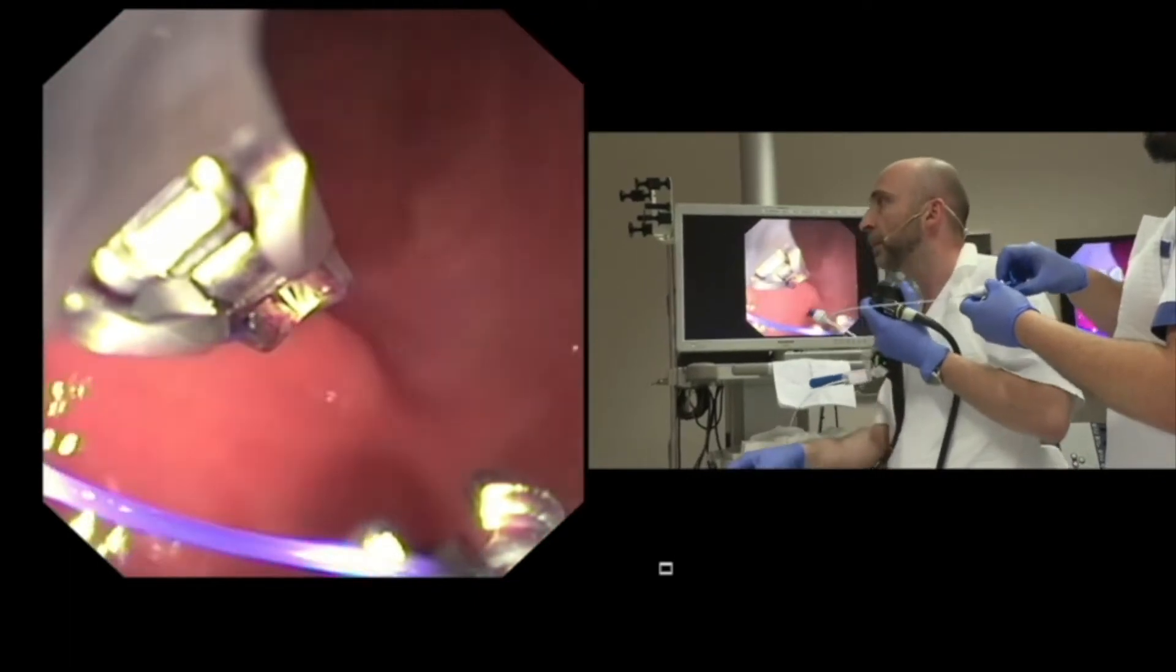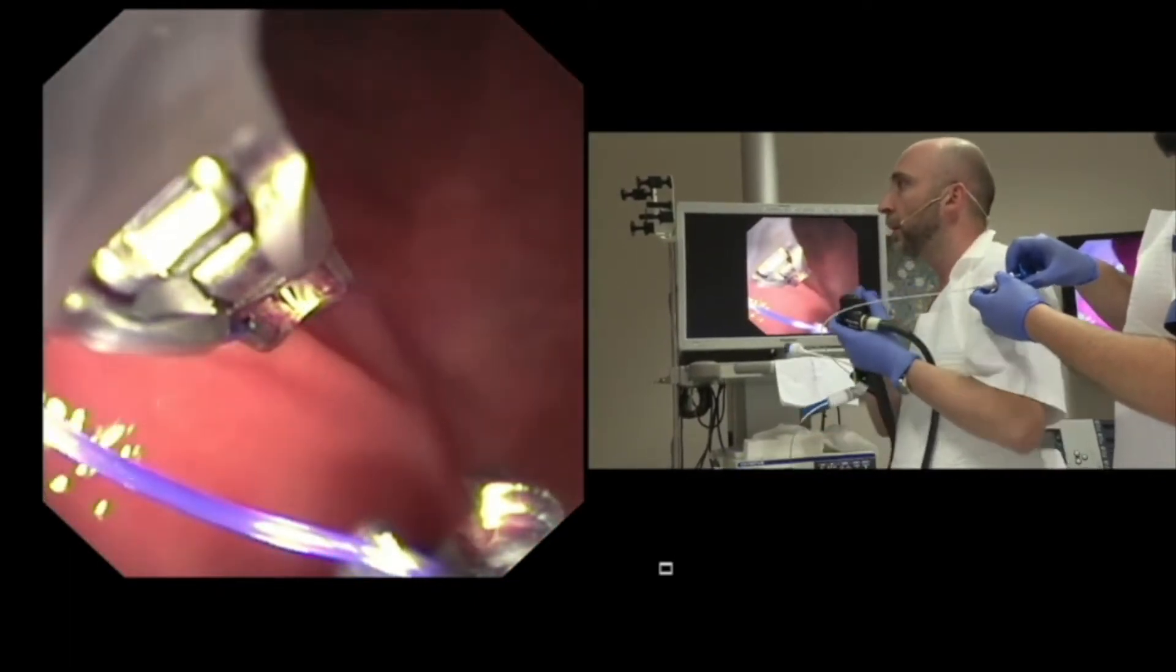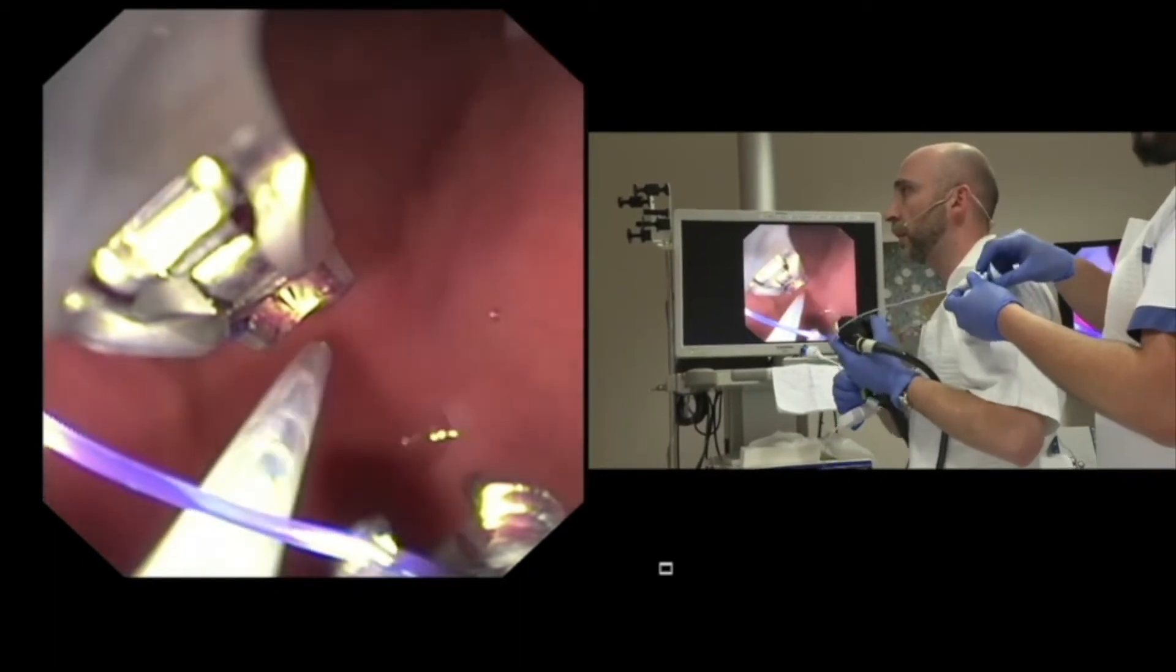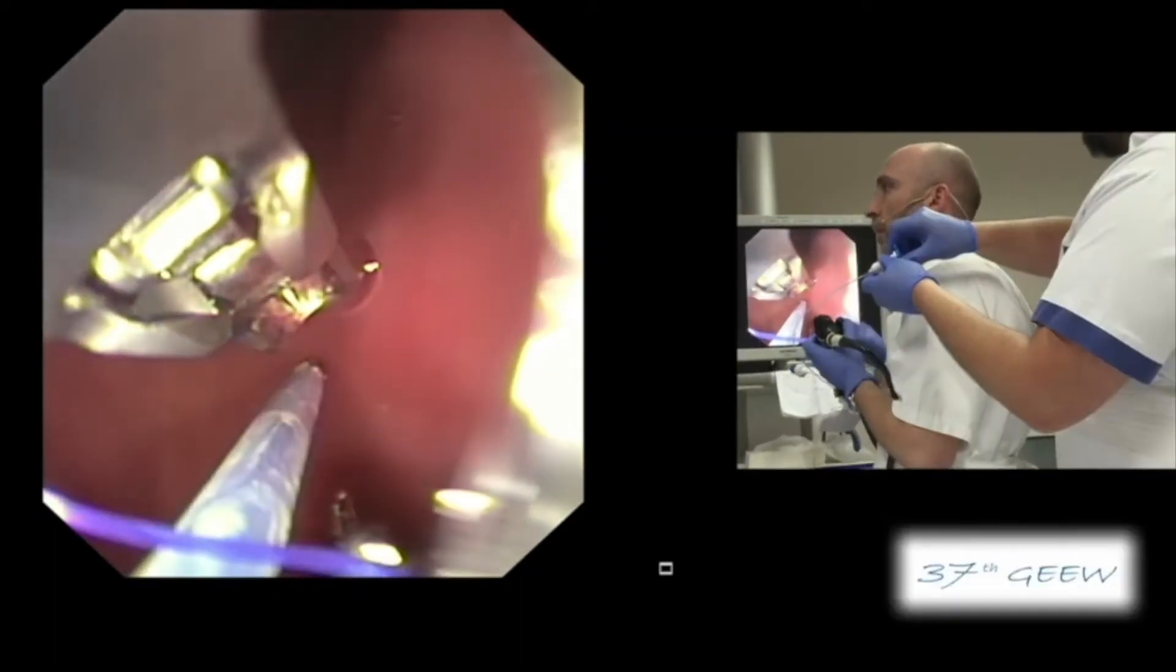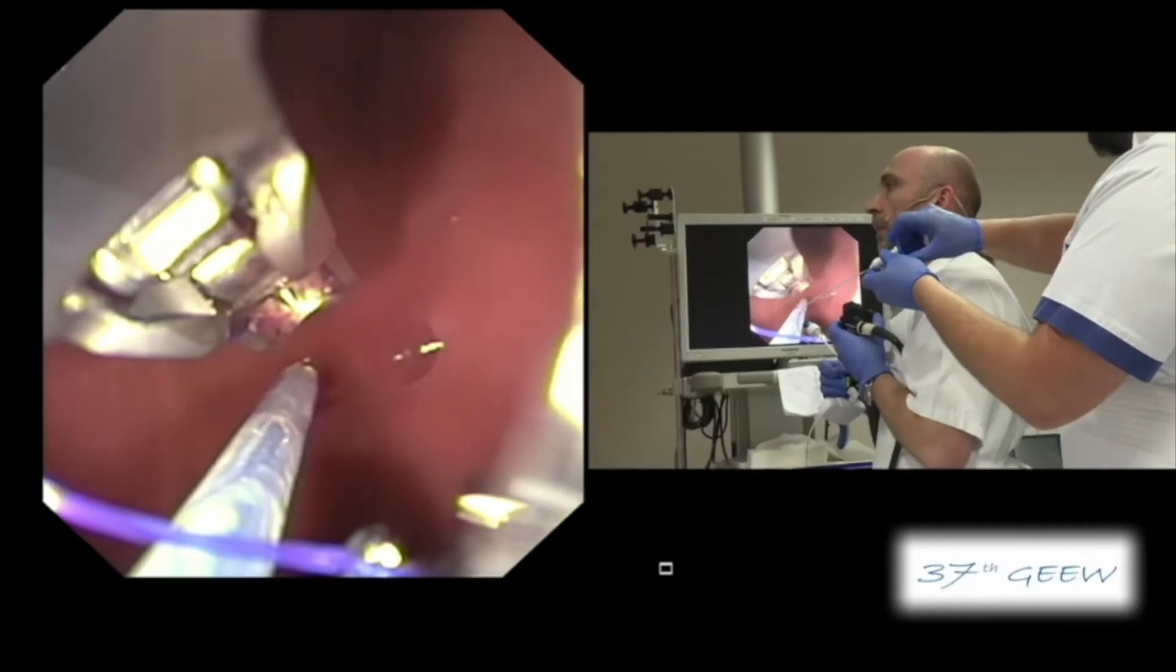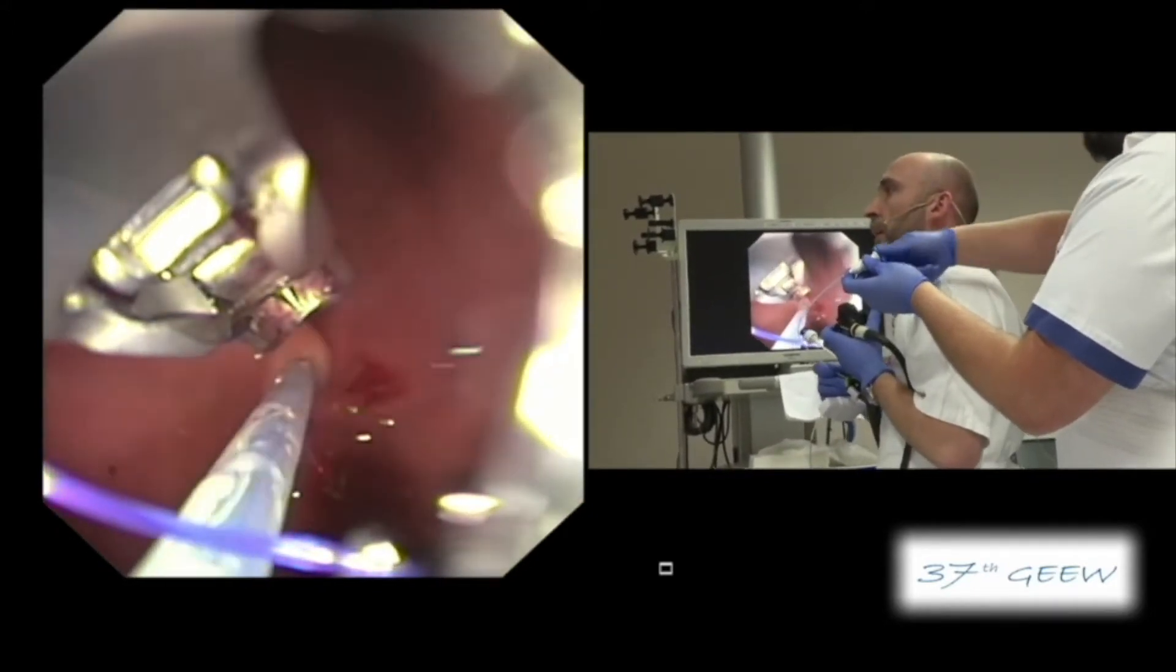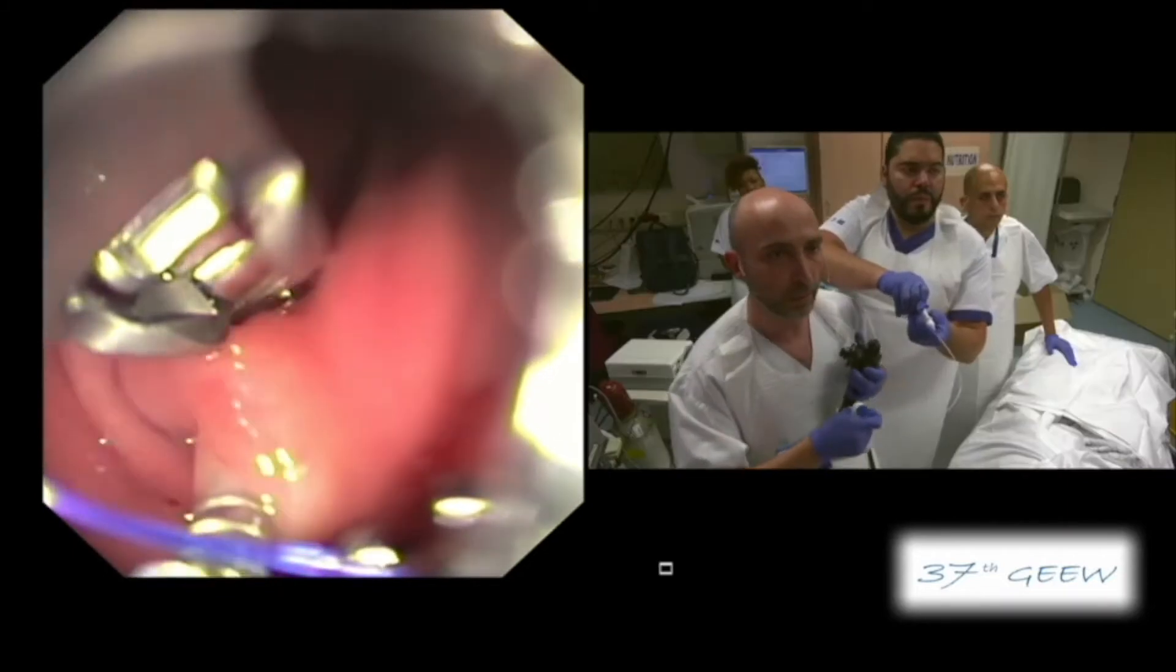Depends how big is the stomach. We can place from three to five to six rows of sutures. You can go here. One, two, three. And again.